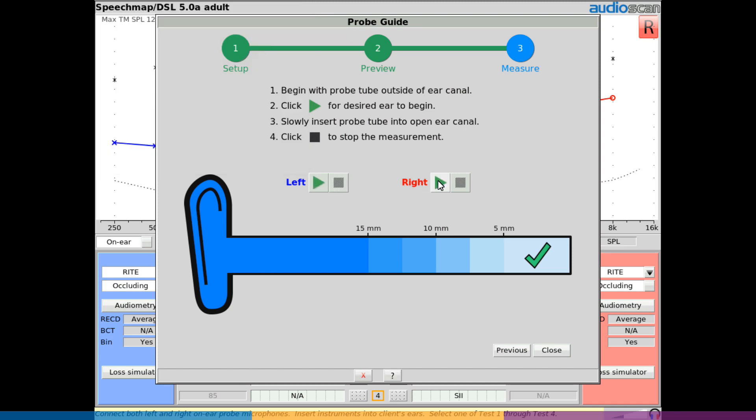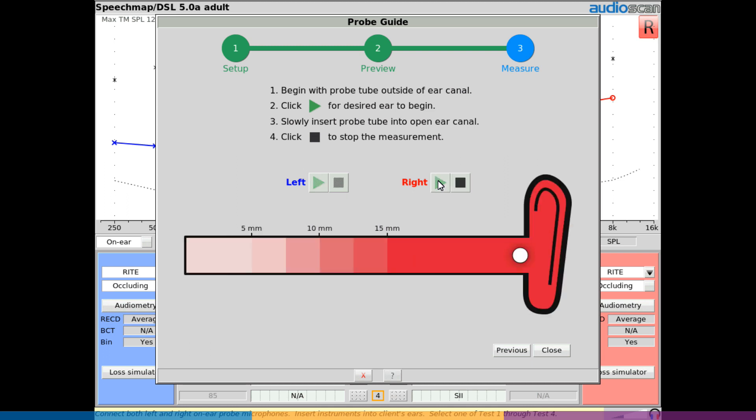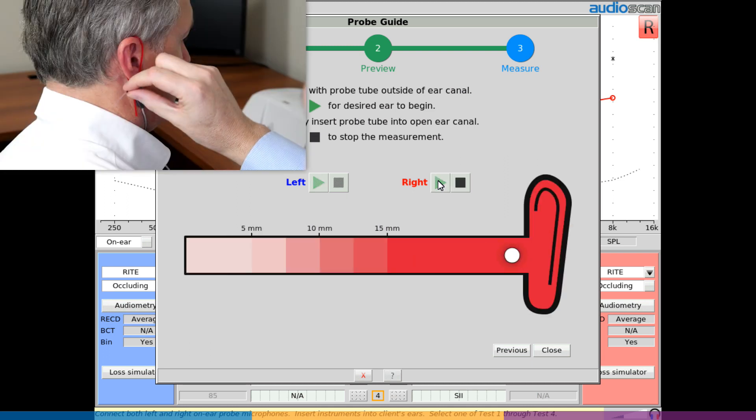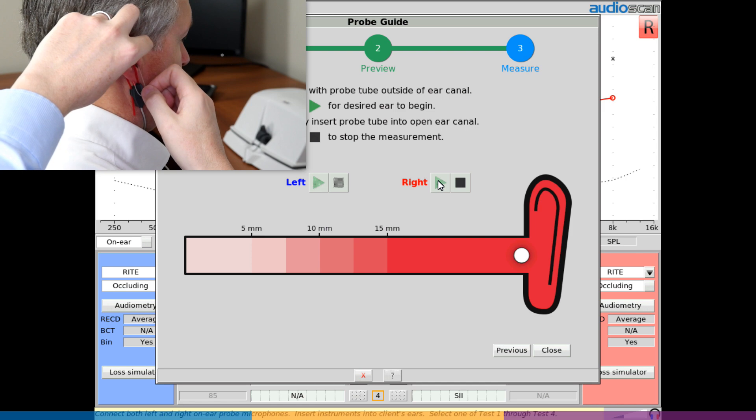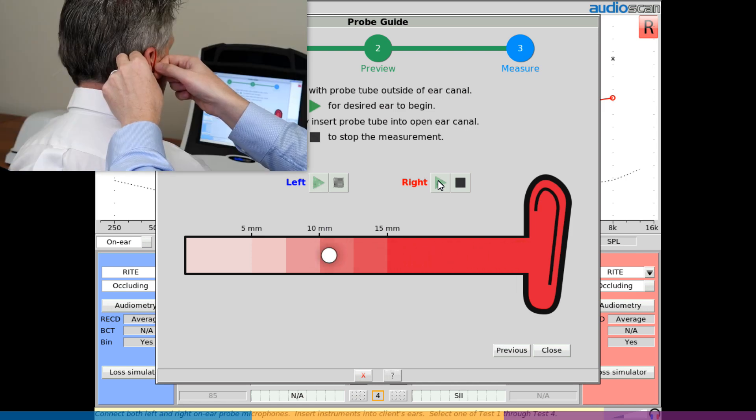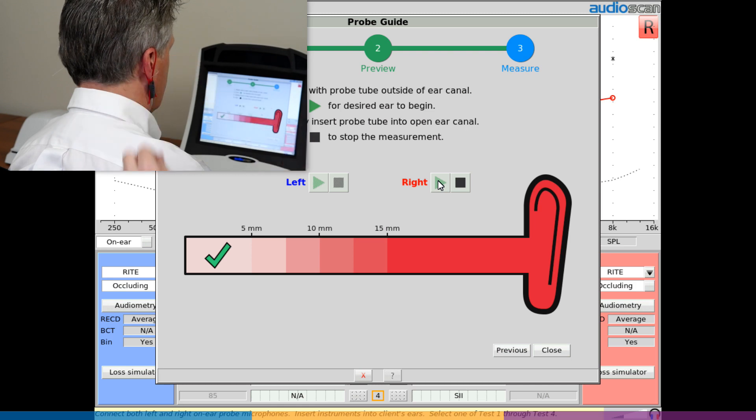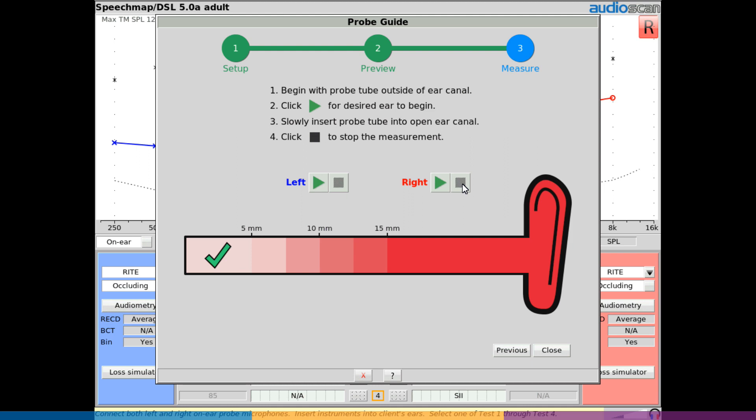Selecting Play for the opposite ear will cause the on-screen orientation to change to match the direction of probe tube insertion. As before, slowly insert the probe tube into the ear canal, passing it around the front of the lanyard. Again, a check mark and chime will indicate successful placement. Click Stop to complete the procedure.